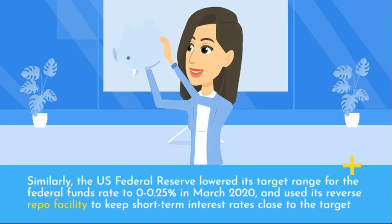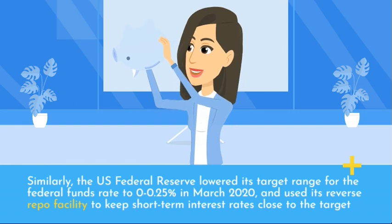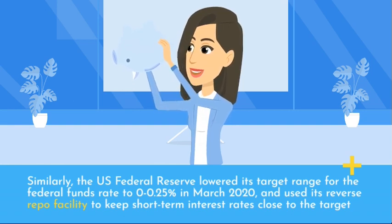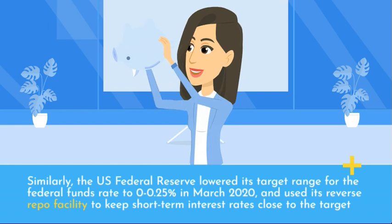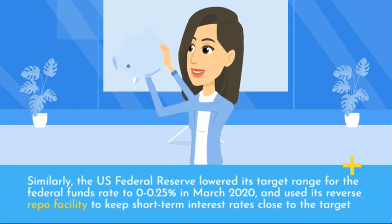Similarly, the U.S. Federal Reserve lowered its target range for the federal funds rate to 0 to 0.25% in March 2020 and used its reverse repo facility to keep short-term interest rates close to the target.